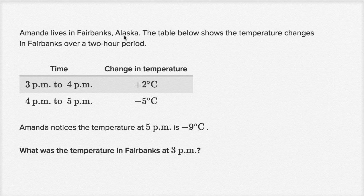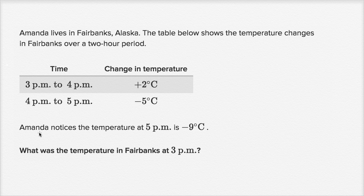Amanda lives in Fairbanks, Alaska. The table below shows the temperature changes in Fairbanks over a two-hour period. When we went from 3 p.m. to 4 p.m., the temperature increased by two degrees Celsius. And then from four to five, the temperature decreased by five degrees Celsius. Amanda notices the temperature at 5 p.m. is negative nine degrees Celsius.